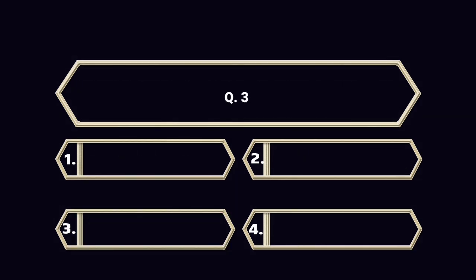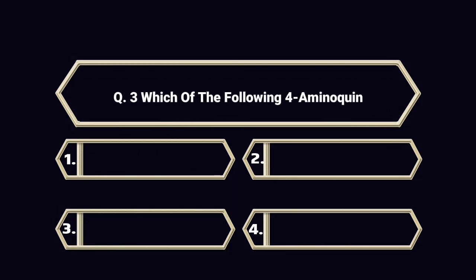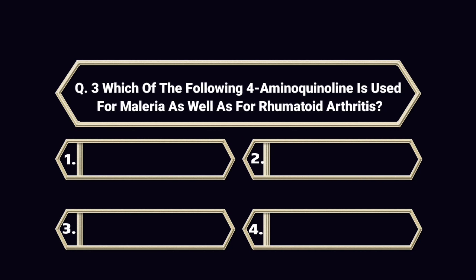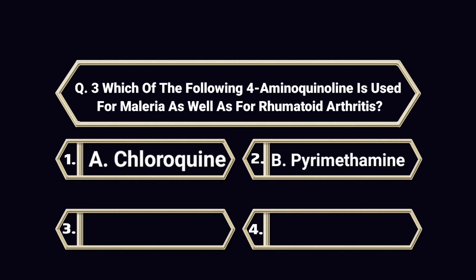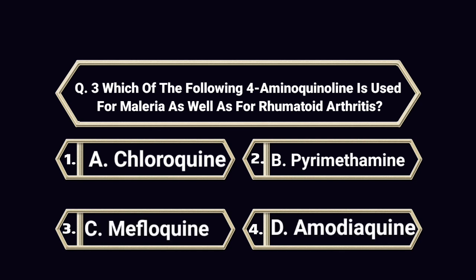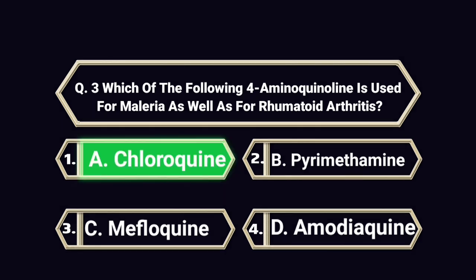Question number 3. Which of the following 4-aminoquinolines is used for malaria as well as for rheumatoid arthritis? A. Chloroquine. B. Pyrimethamine. C. Mefloquine. D. Amodiaquine. Answer is A. Chloroquine.